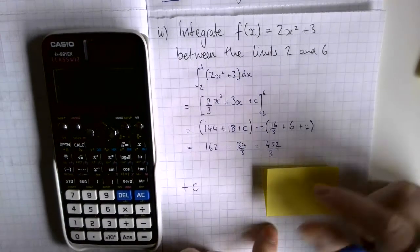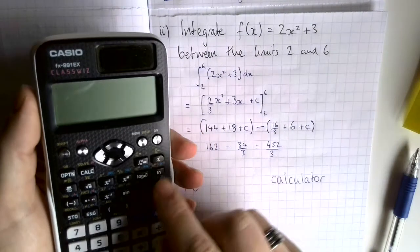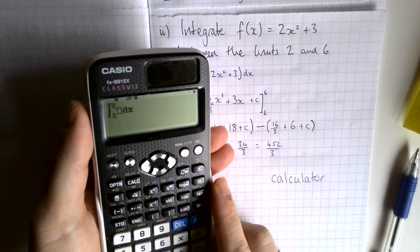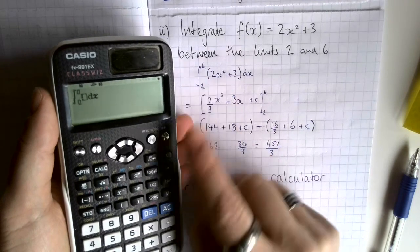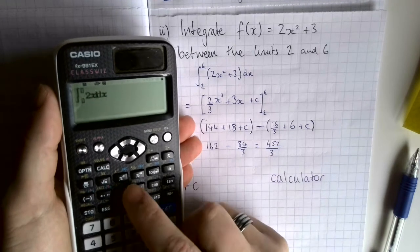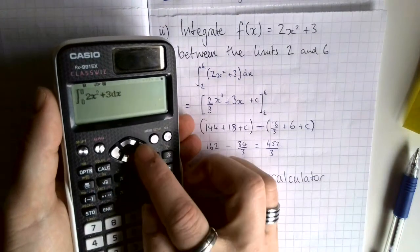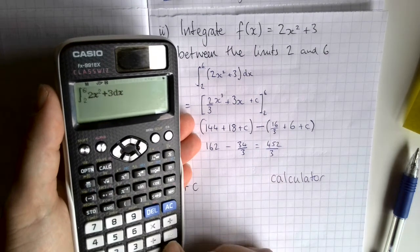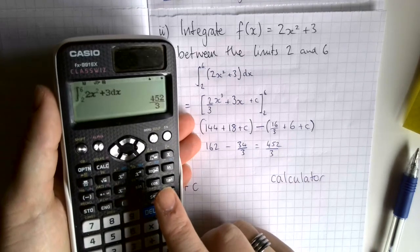Another thing to point out: your calculators can do definite integrals. In normal mode there's an integral button. You put the function in — so 2x squared plus 3 — then navigate across to the lower limit which was 2, then the upper limit which was 6, and press equals. We get the same answer as before, which is nice. So calculators can help a lot with these.